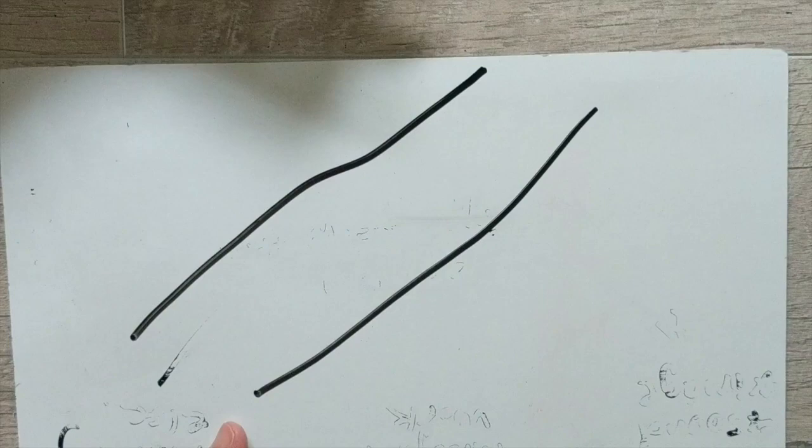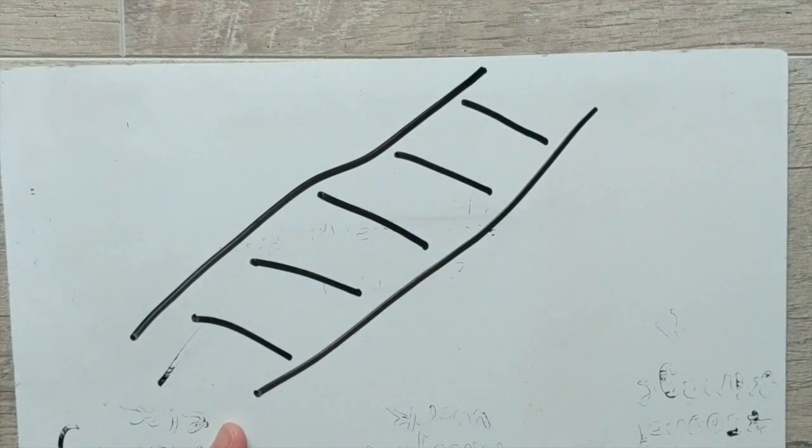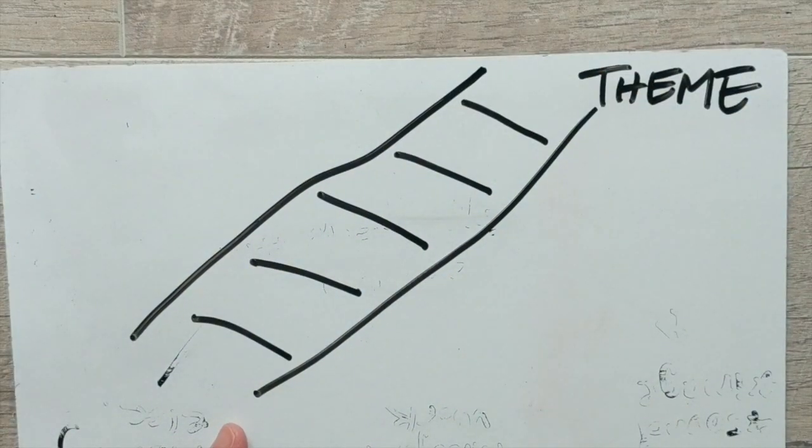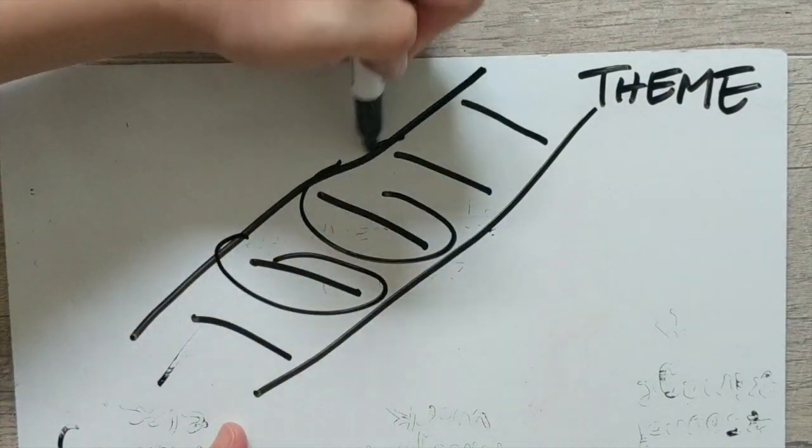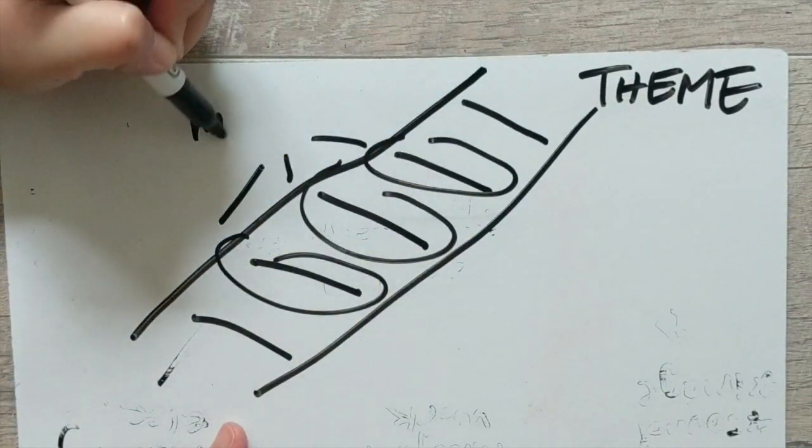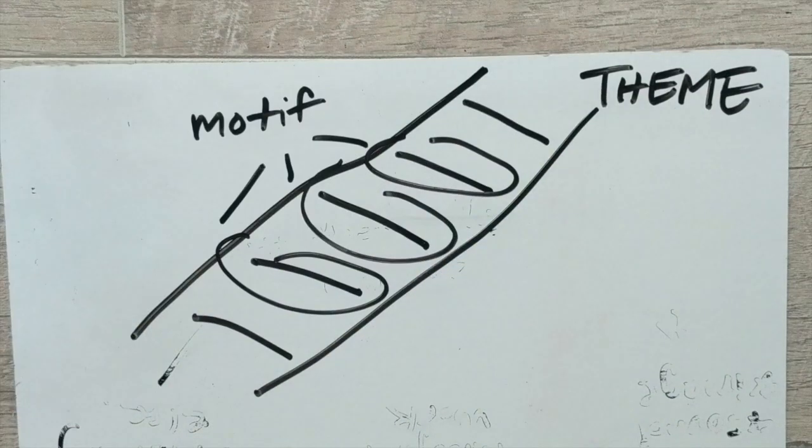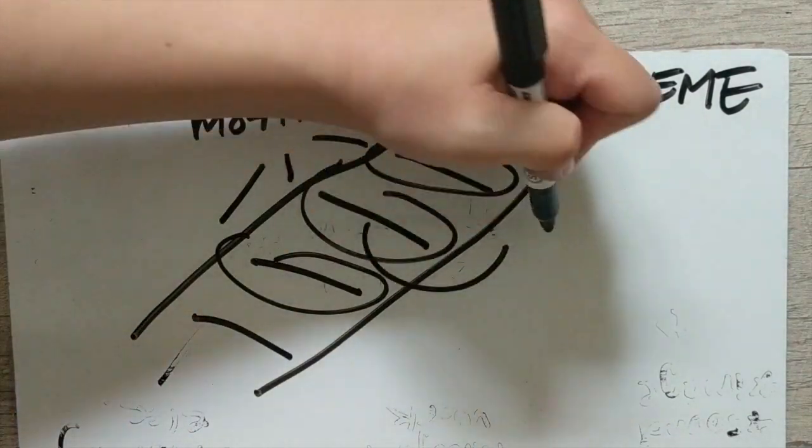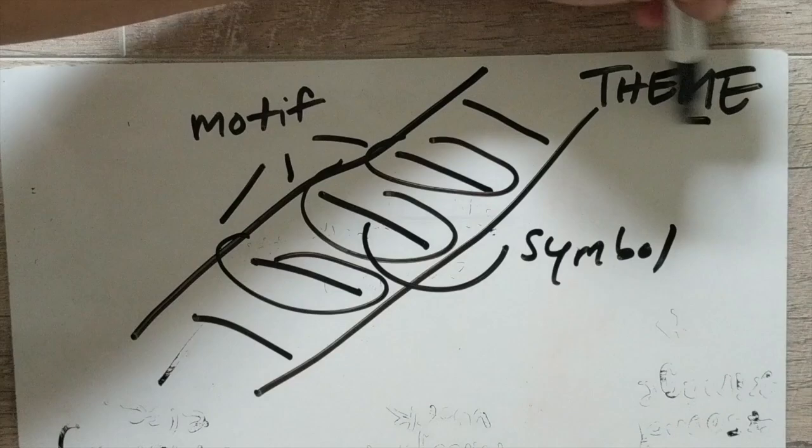So here is a ladder, kind of a crooked ladder, and those are the rungs. And you're trying to get to the theme. Motifs act as the rungs to the ladder to help develop the theme and help the reader get to it. And a symbol can be a specific type of rung in that ladder that gets to the theme.